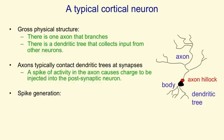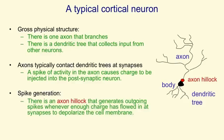A neuron generates spikes when it has received enough charge in its dendritic tree to depolarise a part of the cell body called the axon hillock. And when that gets depolarised, the neuron sends a spike out along its axon, and the spike is just a wave of depolarisation that travels along the axon.